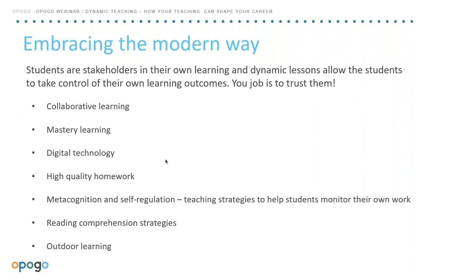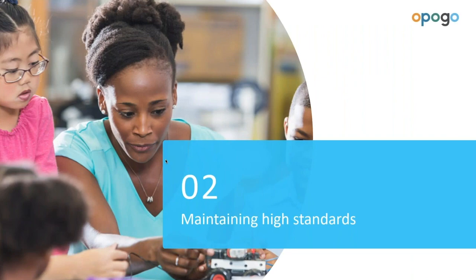You do this through a number of different ways, which you'll be able to see on the screen: collaborative learning, working together in groups; mastery — not just of the subject content but also across the curriculum; how to utilize digital technology; how to produce high quality homework; metacognition and self-regulation teaching strategies to help students monitor their own work through peer and self-assessment; reading comprehension strategies; and ultimately, outdoor learning — taking what we learn in the classroom into the real world.